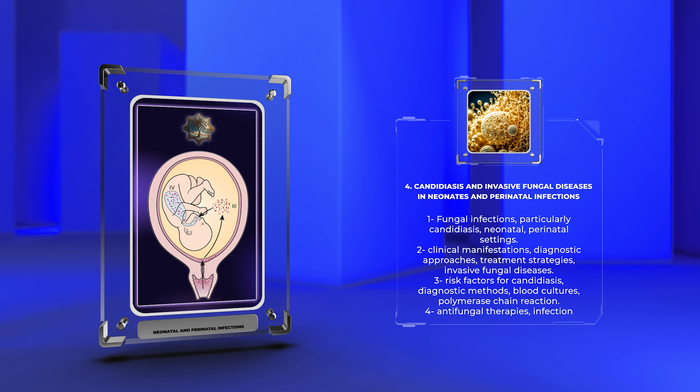TORCH infections encompass a group of pathogens that can wreak havoc on the developing fetus and newborn. Understanding the distinct clinical manifestations, diagnostic challenges, and practical management strategies for each TORCH pathogen is essential for improving outcomes in affected neonates. This includes a comprehensive overview of each TORCH pathogen, specific clinical manifestations, diagnostic tests, treatment options, and counseling approaches for affected families.